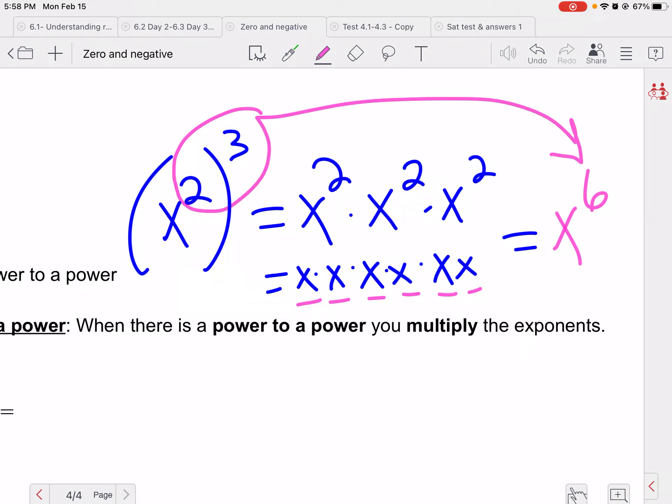Well, the shorthand is two times three equals six. So that's our trick.